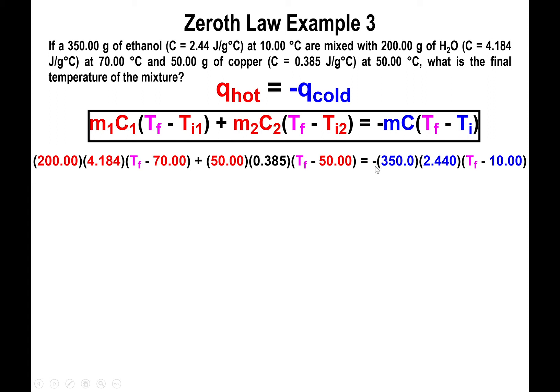As a whole, for q_cold we make sure to place that negative in front of the entire mC∆T term. So negative followed by the mass of the cold stuff, which is ethanol—so 350 grams of ethanol. We have a specific heat capacity of ethanol 2.44, and we have initial temperature for the cold stuff of 10 degrees Celsius. So we have T_f minus 10 degrees Celsius. All right, so we're good to go.